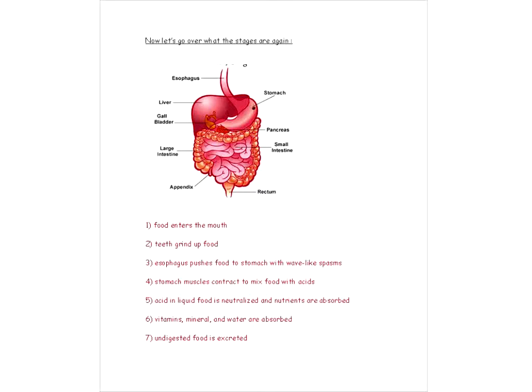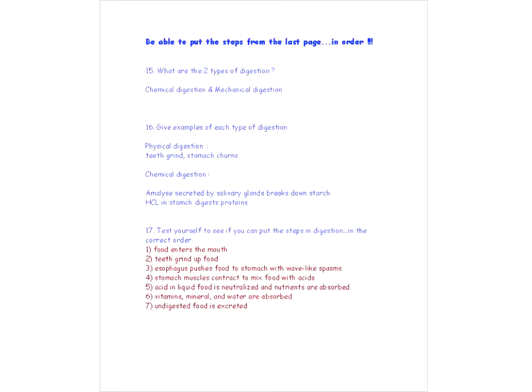Now once the food is in the stomach, the stomach contracts, and this causes the food to mix with the acids in the stomach. Then acids in liquid food are neutralized, and nutrients are absorbed. Okay, so again, remember this is in the small intestine, the nutrients being absorbed. Then vitamins, minerals, and water are absorbed, and again, we know that's in the large intestine. And last of all, undigested food is excreted out the rectum here. Great stuff. Okay. So be able to put those steps in order that we just looked at. Be able to do that, please.